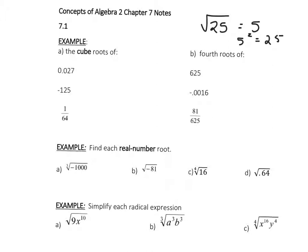So today we're going to do cube roots, fourth roots, higher roots. So if you're just doing the cube root of 0.027, you can just put this in your calculator. What you do is press math on the left hand side, and you'll have a feature — it's the fourth one down — that's a cube root. The cube root of 0.027 is 0.3.